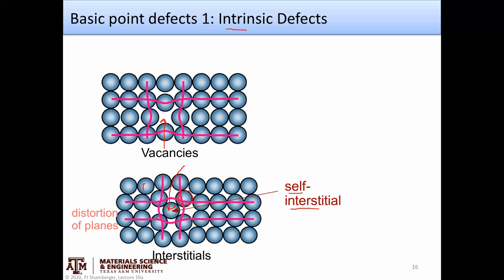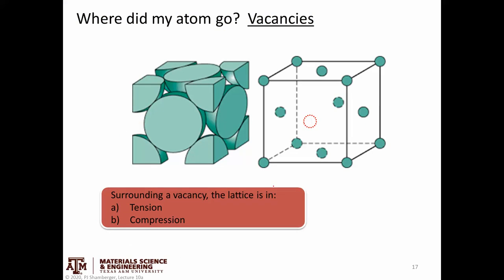For example, an iron atom in an iron lattice sitting in one of these interstitial positions would be called a self-interstitial. It's important to understand that these defects affect the surrounding volume as well — there's a distortion in the immediately surrounding region. Because there's essentially a vacuum at a vacancy, those atoms are drawn into it, and because there's an extra atom at an interstitial, it pushes the atomic planes outward. We can think about these as localized regions of compression or expansion — either tension or compression around an area.